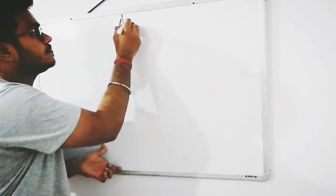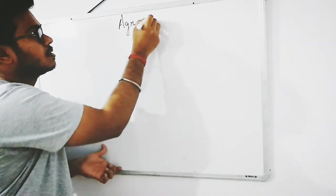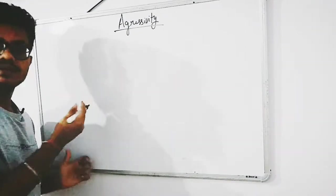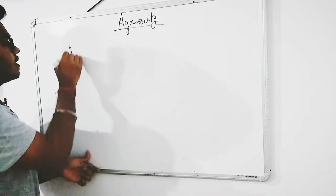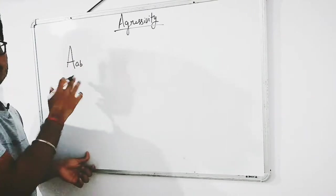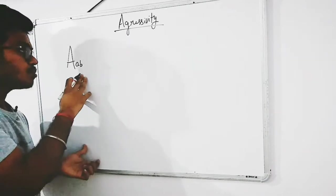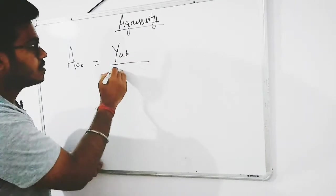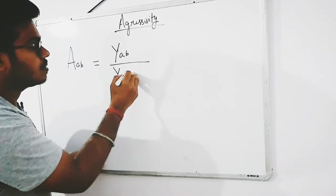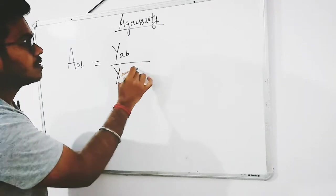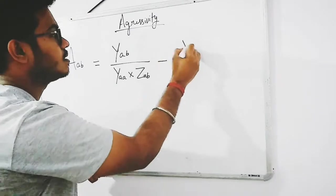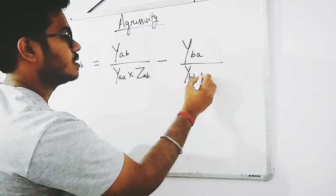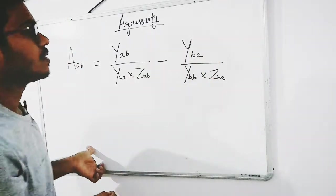Aggressivity has a very easy formula. Aggressivity of two crops A and B is equal to the yield of crop A in the intercropping system divided by the yield of crop A as a sole crop multiplied by ZAB, minus the yield of crop B in intercropping divided by the yield of crop B as a sole crop multiplied by ZBA.